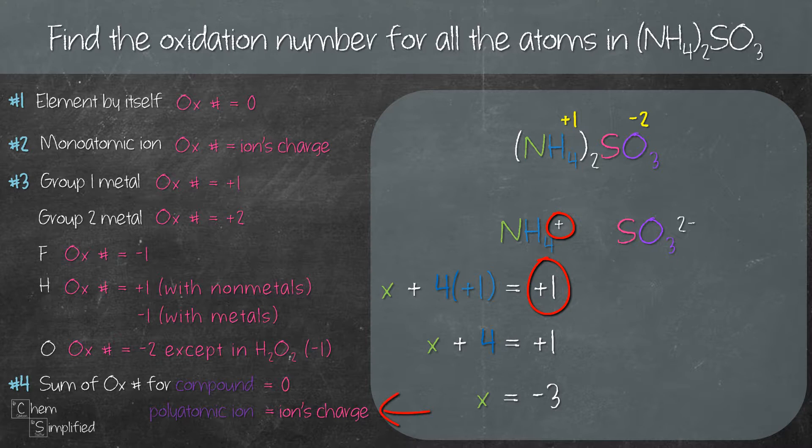So solving that is going to give us X equals minus 3. That gives us the oxidation number for nitrogen is negative 3.